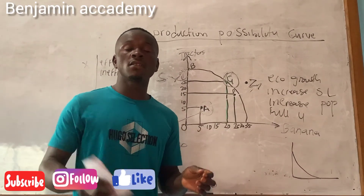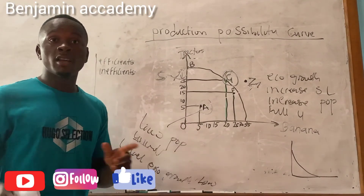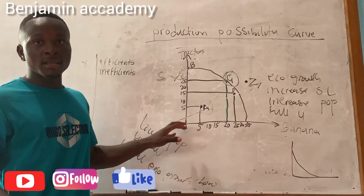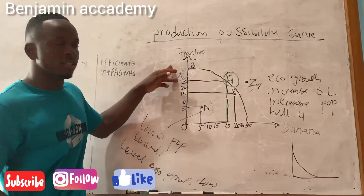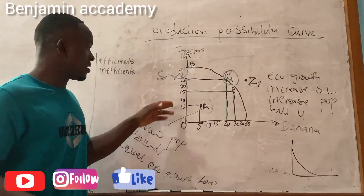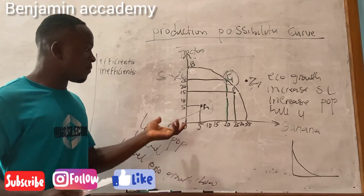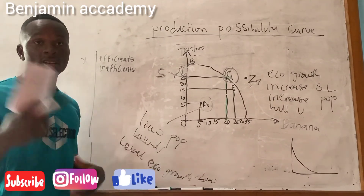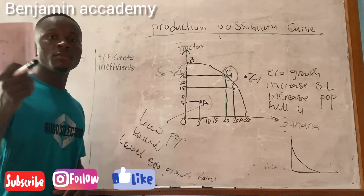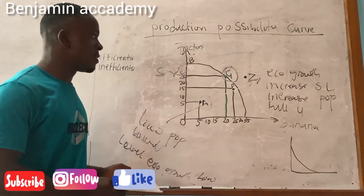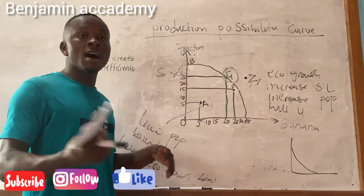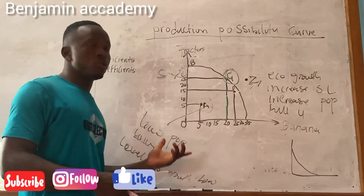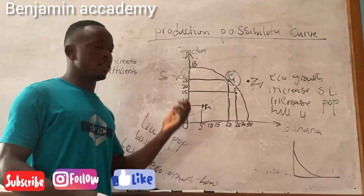Choice is the act of selecting. If a country wants to make a choice, it draws a list of unsatisfied wants, arranging them from most important at the top to least important at the bottom. Opportunity cost is the next best forgone alternative, and scarcity means resources are limited in supply relative to demand.